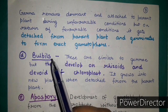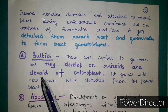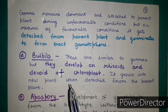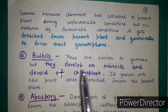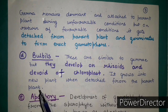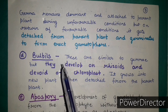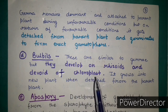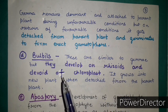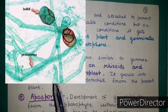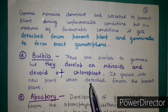The fourth method is by bulbils. Bulbils are similar to gemmae, but they develop on rhizoids and are devoid of chloroplasts, whereas gemmae contain chloroplasts. When bulbils detach from the parent plant, they grow into a new plant. So bulbils differ from gemmae in that they lack chloroplasts and develop specifically on the rhizoids.